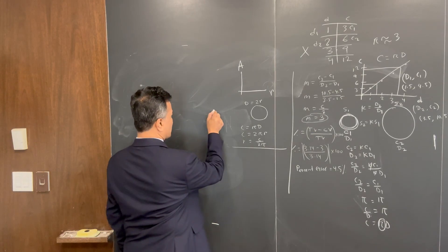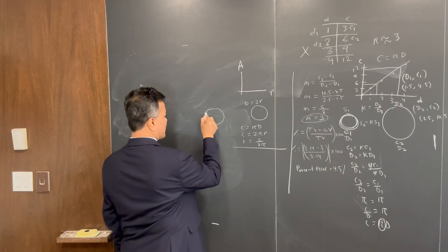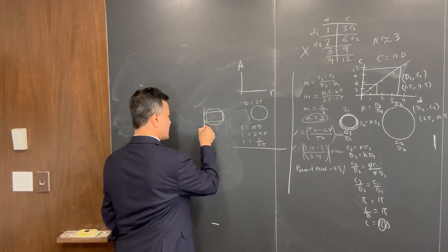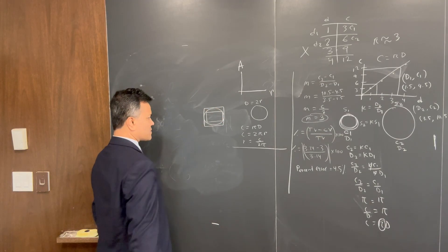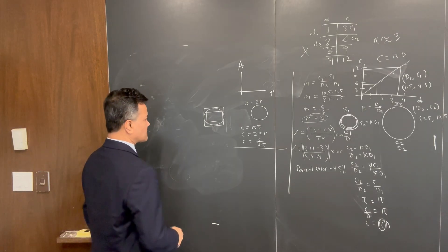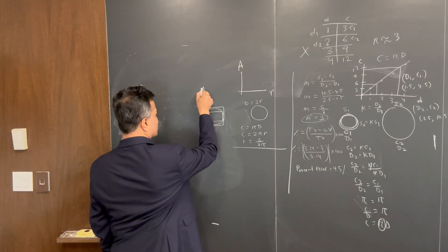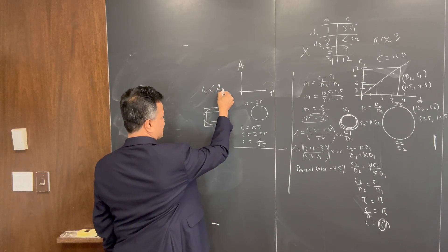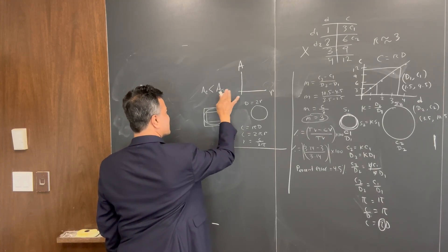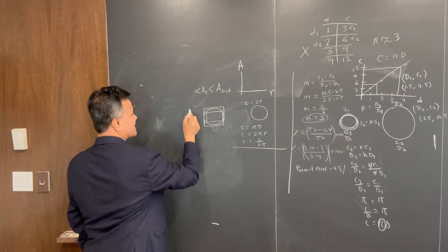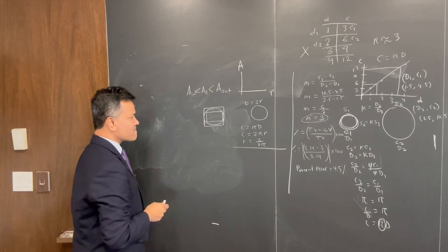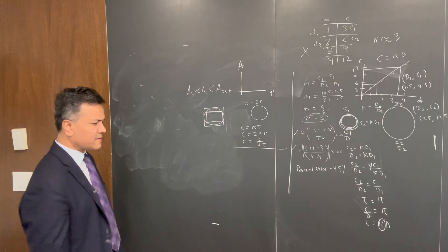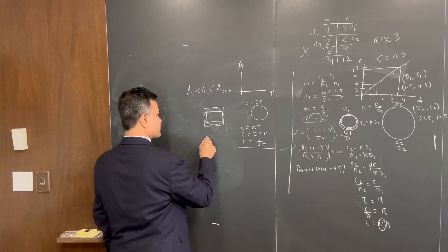What Archimedes did: he drew a circle, inscribed a square inside the circle, and circumscribed a square outside the circle. This gives us an inequality: the area of the inscribed square is less than the area of the circle, which is less than the area of the circumscribed square. We'll call these area-in and area-out.